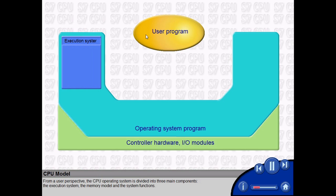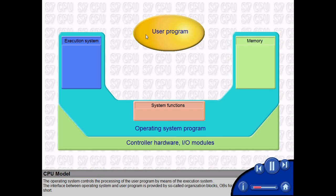The execution system, the memory model, and the system functions. The operating system controls the processing of the user program by means of the execution system. The interface between operating system and user program is provided by so-called organization blocks, OBs for short.